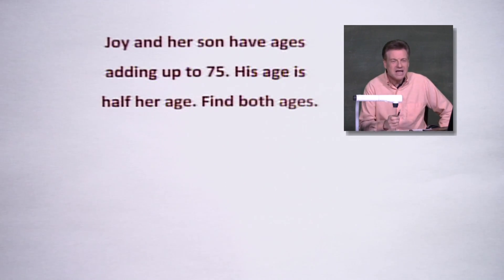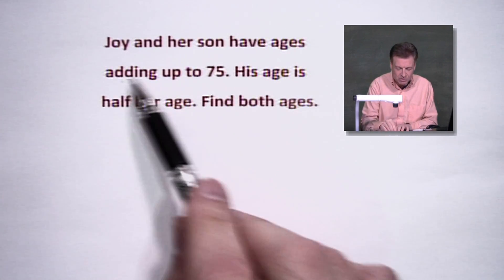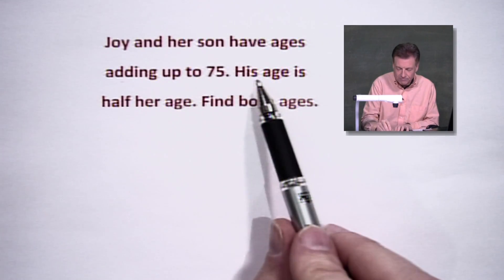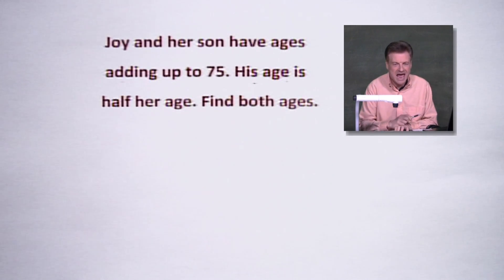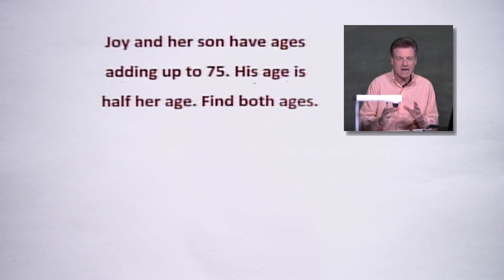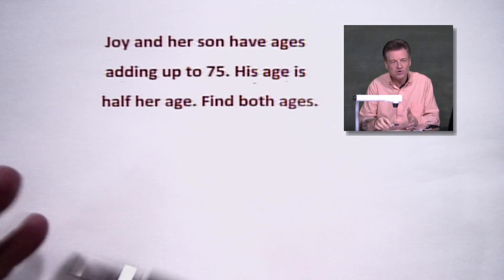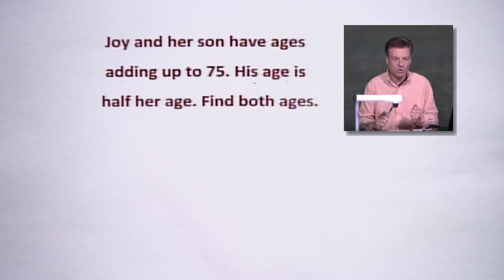But there are lots of options by having numbers that add up to 75. Now, the second option narrows things down. It says his age is half her age. So I'm thinking like 20 and 40. His age will be 20, hers will be 40, but those don't add up to 75 either. So we've got two things that have to work together. They've got to work together.